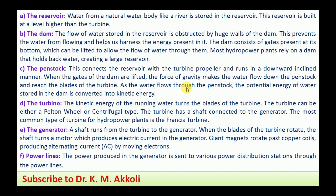Now we will quickly discuss the components of the hydel power plant. The reservoir: water from a natural body like a river is stored in the reservoir, which is built at a level higher than the turbine because we need the head — the vertical distance — to have the potential energy to operate the turbine. The dam: the flow of the water stored in the reservoir is obstructed by huge walls of the dam, which blocks and stores the water in the reservoir.